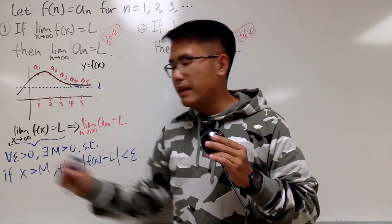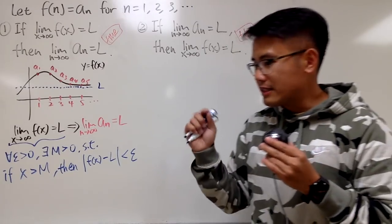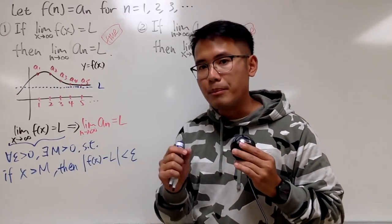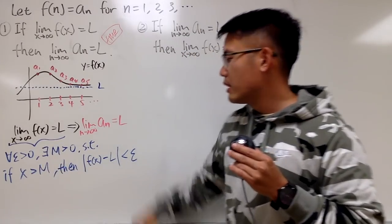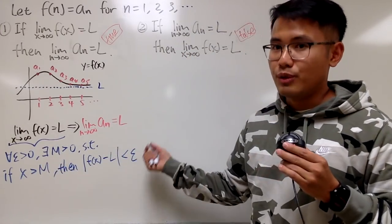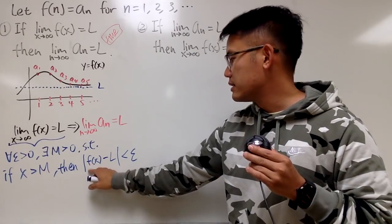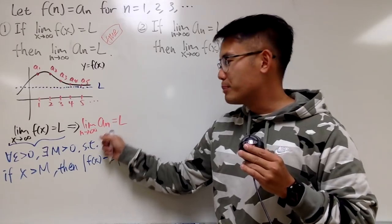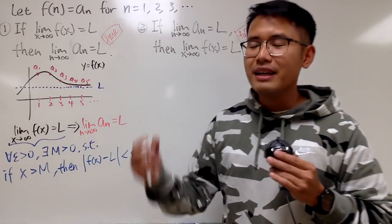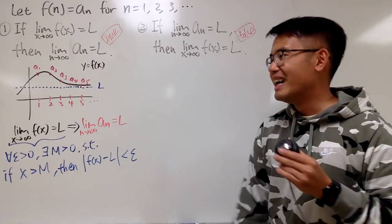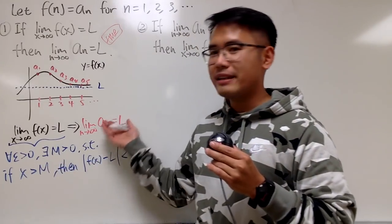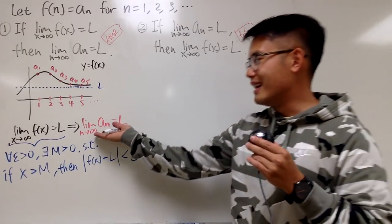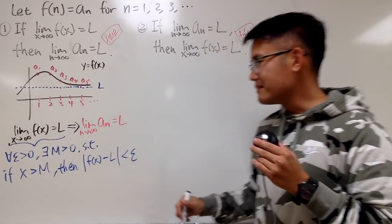The idea is that you can make ε as small as you'd like, but there will always be a big number M such that once x passes that big number, the distance is less than ε. You can guess the definition for the sequence: instead of x, you put n, and n is just positive whole numbers. This stronger statement for x of course implies the result for n, because x can be anything, any real number in the domain, but n is just a positive whole number.